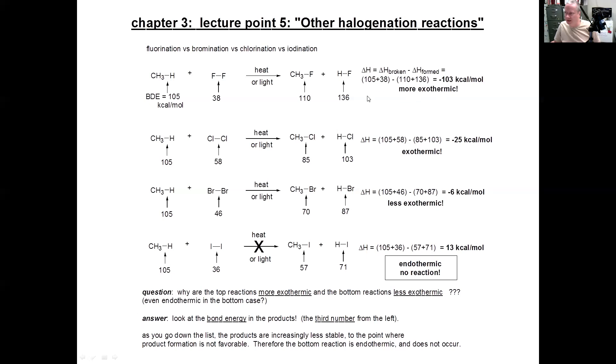So it's -103 kilocalories per mole. The reason is, when you add up everything, the fluorine bond is a little bit weaker, and the fluoromethane bond is a little bit stronger. When you do all the math, Delta H is -103 kilocalories per mole. So that's a much, much more exothermic reaction.